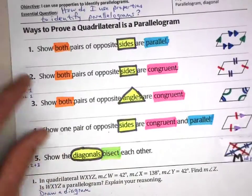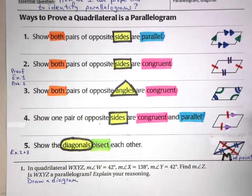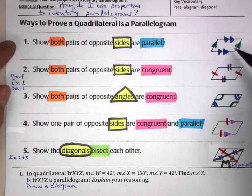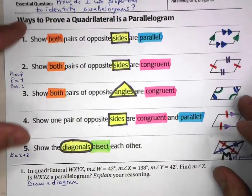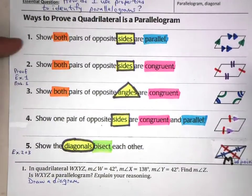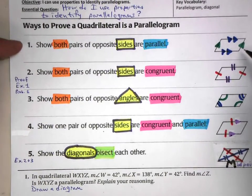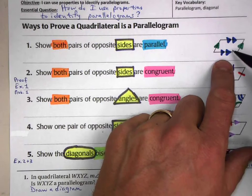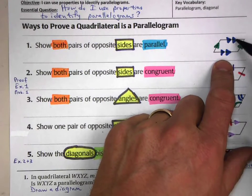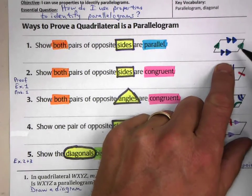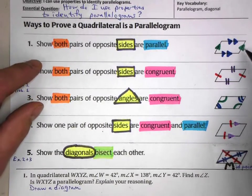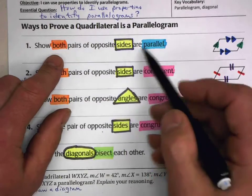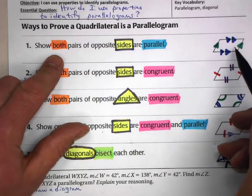What we're doing now is saying, how can we prove whether a quadrilateral is a parallelogram? Here are our five different ways. The first way is just the plain old definition of a parallelogram, which is that both pairs of opposite sides are parallel. That's really the definition of a parallelogram, so of course, if both pairs of opposite sides are parallel, then it is a parallelogram.